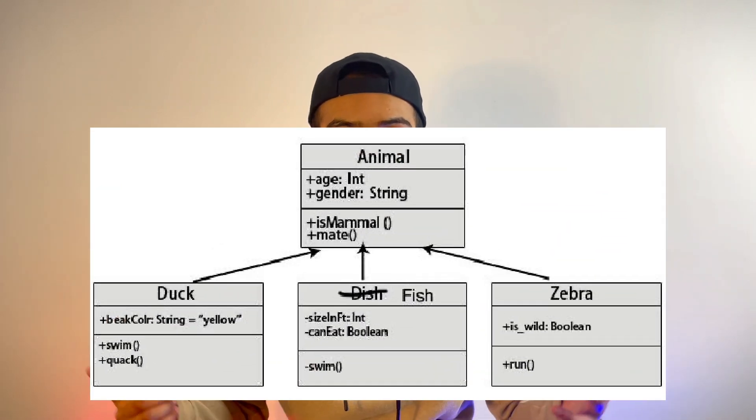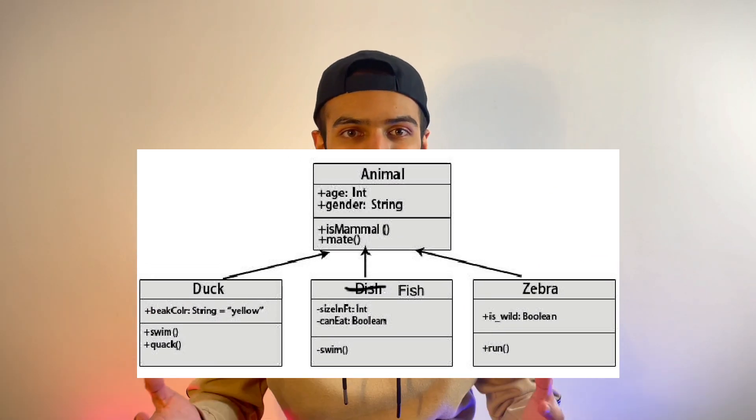An animal has attributes and methods. Attributes meaning its name and its species type, and methods meaning what the animal can do — for example it can eat, it can sleep, and so on. This is the idea of object-oriented programming — creating objects and using them.